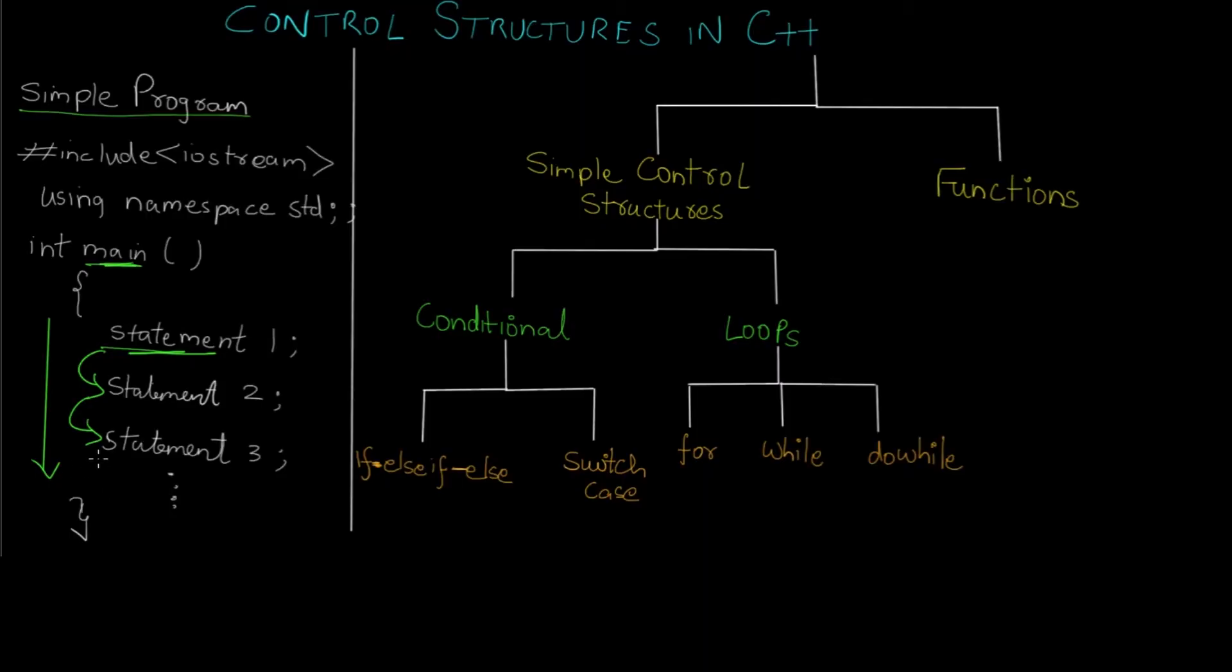But what if you want your program to execute in a different fashion - depending upon statement one and the input or output or whatever function is happening at statement one, depending on this value you want either statement two or statement three to be executed. So here is a condition. Not every statement is going to be executed depending on the condition of statement one. Such functionality is provided by control structures.